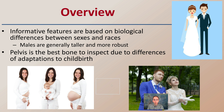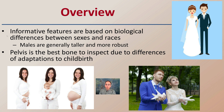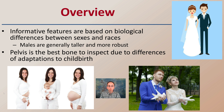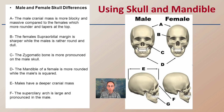For a general overview, informative features are based on biological differences between the sexes and even races. Males are generally taller and more robust than females. The pelvis is the best bone to inspect, given the differences in adaptations to childbirth, with the female tending to have a wider pelvic region. That's the ideal bone if you're given the full skeleton, but there are differences in some of the other bones as well.